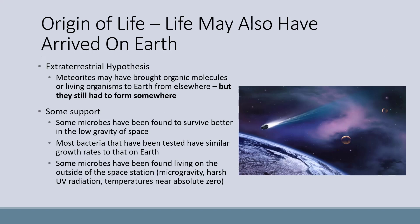Meteorites may have brought organic molecules or living organisms to Earth from elsewhere, but they still had to form somewhere. There are several lines of evidence that make this hypothesis feasible. Some microbes have been found to survive better in the low gravity of space. Most bacteria that have been tested have similar growth rates to that on Earth, and some microbes have been found living on the outside of the space station in spite of microgravity, harsh UV radiation, and temperatures near absolute zero. Nonetheless, life still had to evolve somewhere.